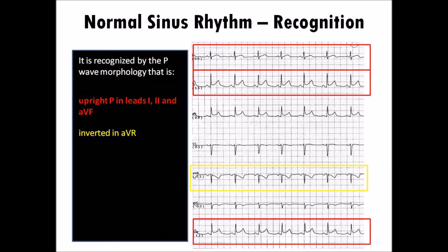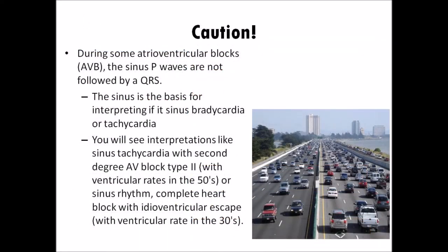The PR interval exceeds 0.12 seconds and can vary slightly with rate. The rate can be between 60 to 100 beats per minute, though most cardiologists agree that the operational limits for normal sinus rhythm range from 50 to 90 beats per minute. Rates lower than 60 beats per minute are considered sinus bradycardia, and rates higher than 100 beats per minute are sinus tachycardia. During some AV blocks, the sinus P waves are not followed by a QRS, so the atrial rate computed using the P-to-P interval is higher than the ventricular rate. The sinus rate is the basis for interpreting whether it is sinus bradycardia or tachycardia.